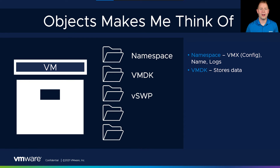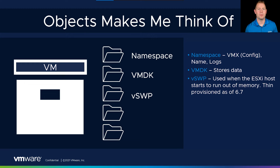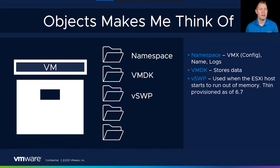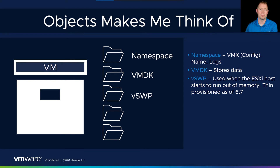Our third object is a vSwap space. This took me a little while to wrap my head around, but a vSwap space is used for our ESXi host when it starts running out of RAM or memory — it's a place for it to start paging to disk. This is different from the Windows page file and different from the swap space for a Linux VM. This is specifically for the ESXi host to page to disk when it runs out of memory.